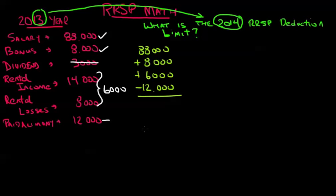So in the end for this taxpayer we would take $88,000 plus $8,000 plus $6,000 minus $12,000. And that will give us $90,000 on which to base our RRSP calculation. You'll remember of course that we're going to use 18% of the earned income, so $90,000 times 18% gives us $16,200.